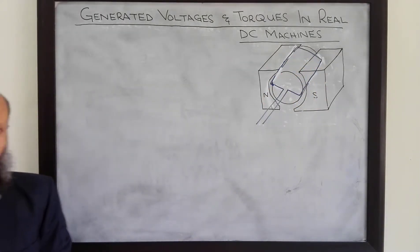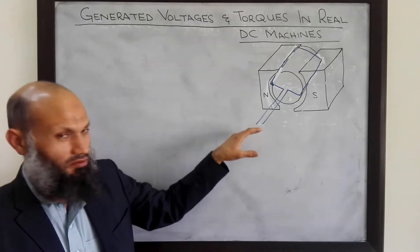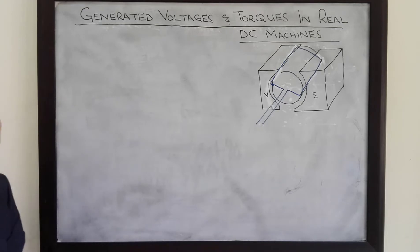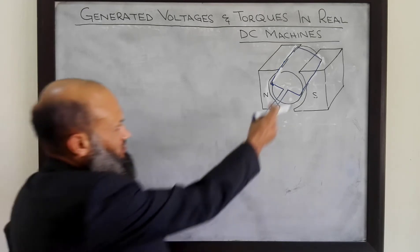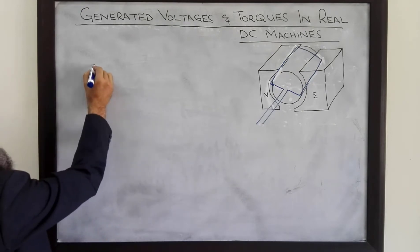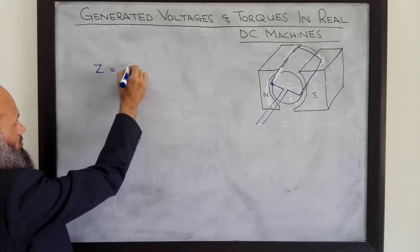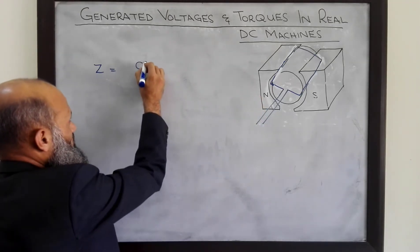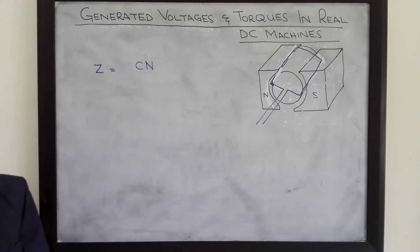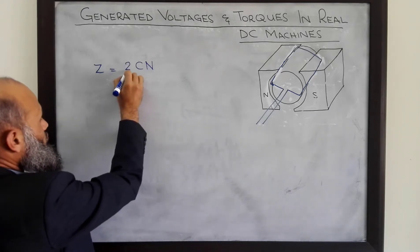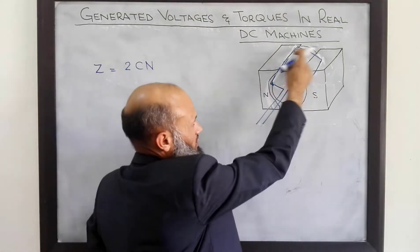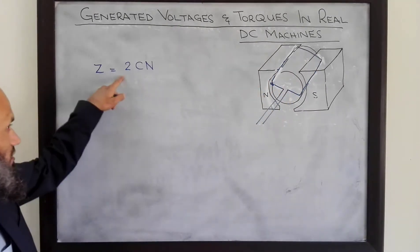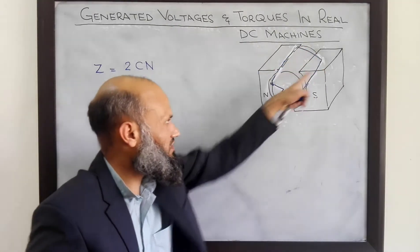In real DC machines the same situation applies — the voltage generated also depends upon the total flux in the machine, the speed of rotation of the rotor, and a constant determined by the construction of the machine. In real DC machines we do not have a single coil with a single turn; rather we have multiple coils with multiple turns in each coil. So the total number of conductors Z equals number of coils multiplied by number of turns per coil multiplied by 2, since there are two sides of a single turn in which voltage is induced.